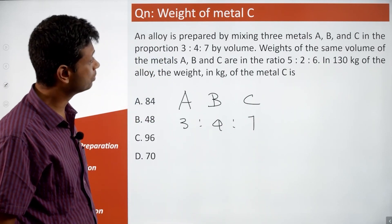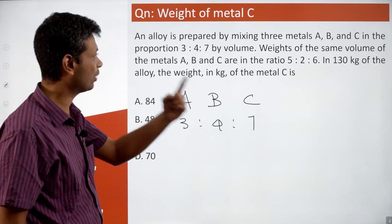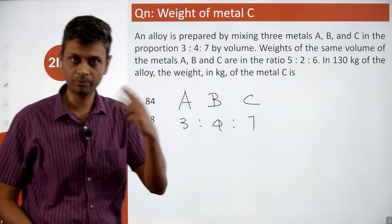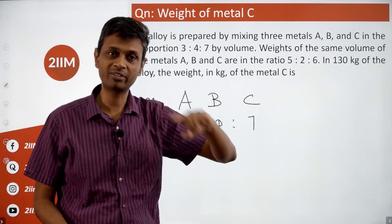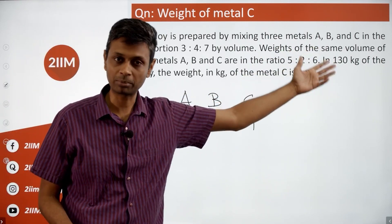For the same volume, that is if you have 1 liter of A, 1 liter of B and 1 liter of C, then the weights are in the ratio of 5:2:6. So for 1 liter you can say it is 5 kilograms, 2 kilograms, 6 kilograms. Why am I saying that?